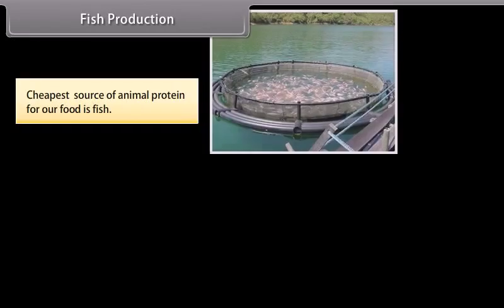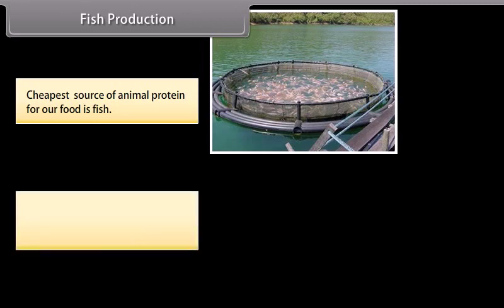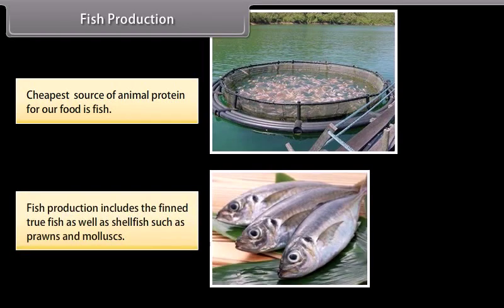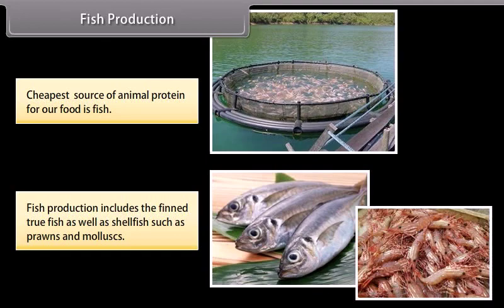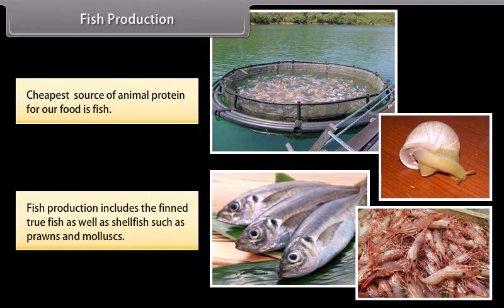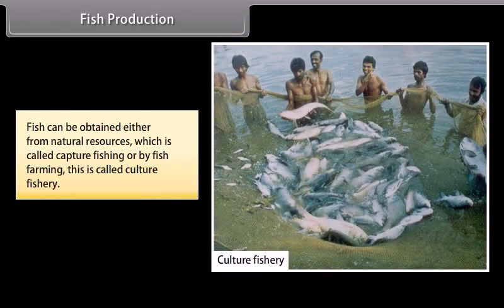Fish is the cheapest source of animal protein for our food. Fish production includes true finfish as well as shellfish such as prawns and mollusks. Fish can be obtained either from natural resources, which is called capture fishing, or by fish farming, which is called culture fishery.